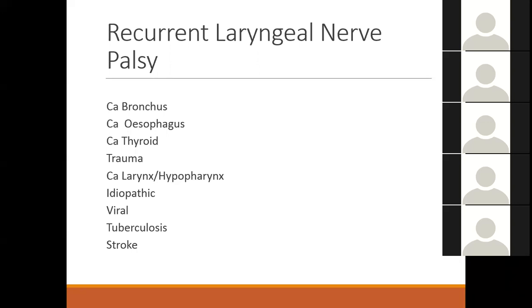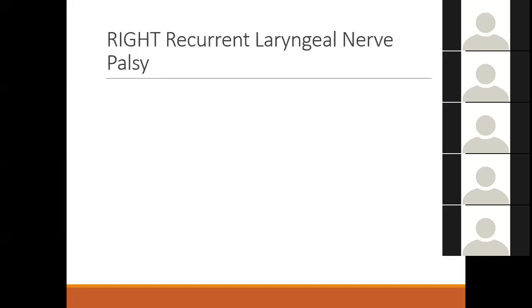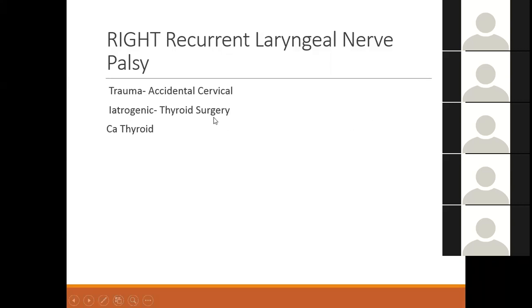Stroke or central causes can also produce hoarseness due to upper motor neuron problems. On the right side, the causes of recurrent laryngeal nerve palsy include trauma, accidental cervical injury, and iatrogenic thyroid surgery. An important distinction: the right recurrent laryngeal nerve does not go into the chest, so right vocal cord paralysis means the cause is only in the neck. On the left side the cause could be in the neck or the chest. If an MCQ asks about right recurrent laryngeal nerve palsy and gives carcinoma of the bronchus as an option — that would cause left, not right, palsy.